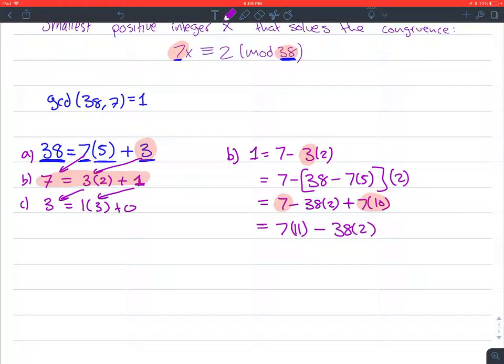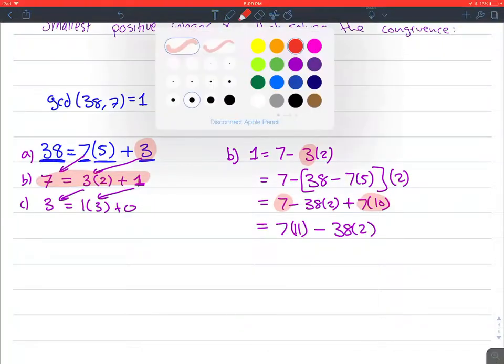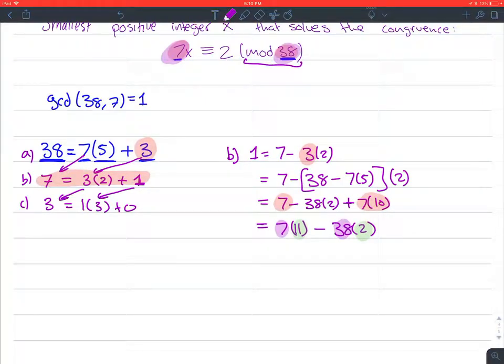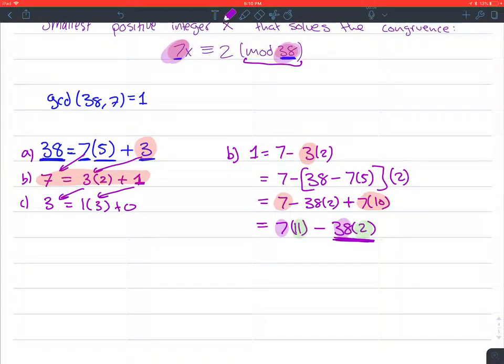Okay, so now we have to know what number is important to us here. And we can figure it out by looking at the original question. So we have 7 up here and we have 38 up here. So the question is, do we want to look at the 11, or do we want to look at the 2? Well, we're taking mod 38. So we know that we're not going to be looking at here, because whatever this is, it's just going to be 0. Because 38 mod 38 is 0. Any multiple of 38 is going to give you a mod of 0. So we're going to be looking at this 11.